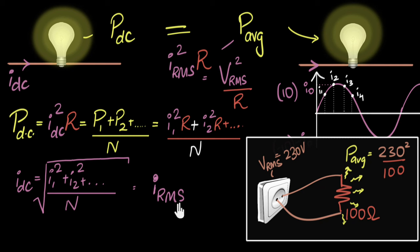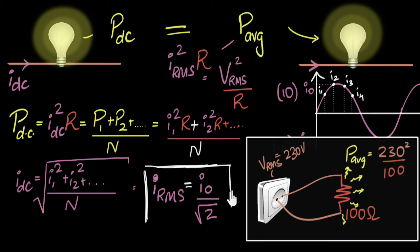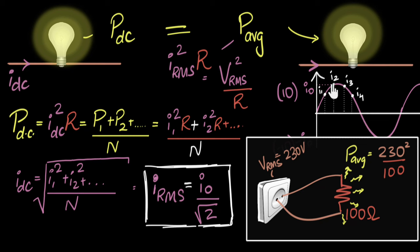It turns out that for sinusoidal currents and voltages, the RMS value equals the peak value divided by root two. So I_RMS = I₀ / √2, and V_RMS = V₀ / √2. We will derive this expression in a future video. Remember, this is only true for sinusoidal currents and voltages — there are other kinds like triangular, sawtooth, or square waves, and for each one the RMS value would be different.